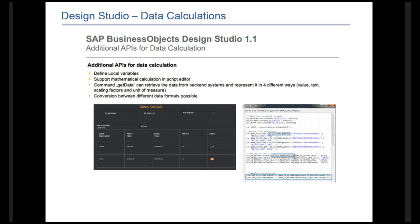You are also presented with a number of different options for calculations, which will greatly improve the logic capabilities of Design Studio. You can define local variables that you can modify, just like you would in Dashboard Designer or Excel or any other programming language. It also supports mathematical calculations inside the script editor — float to string, equal sign comparisons, multiplication, and more. Get Data also now supports values, text, units of measure, and scaling factor, which was not previously supported, and you can convert between different data formats.